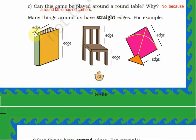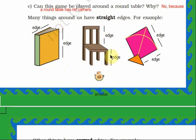The things which have straight edges have corners. You can see: this is an edge, this is another edge, and this point where they meet is a corner. Objects with straight edges have corners. For a kite, you can also find corners — this is a corner, this is a corner, and this is also a corner. So, the things which have straight edges have corners.